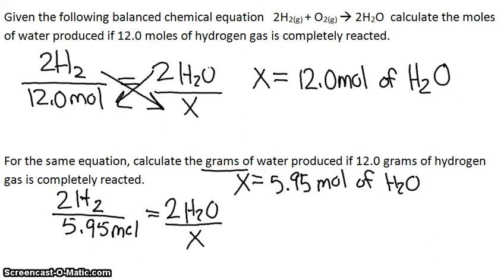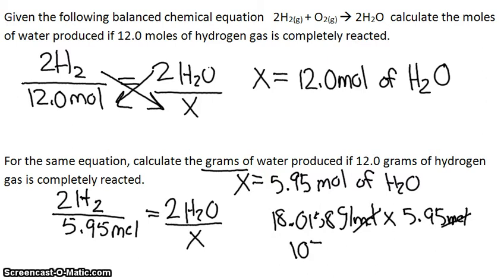So now we have to convert our moles back to grams. So we find the molar mass of H2O, which we know is 18.0158 grams per mole. And we multiply that by the moles of H2O, which is 5.95 moles. Our moles are going to cancel again. And for the grams of H2O, we get that our final answer is 107 grams of H2O.